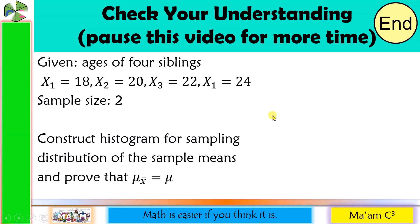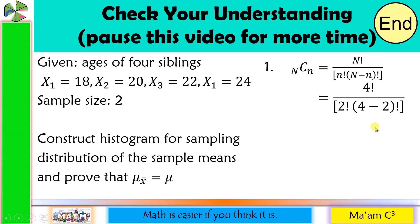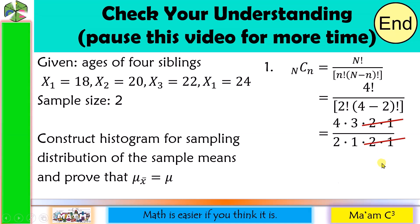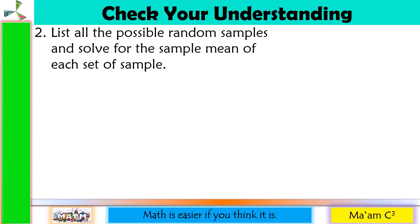Let us start. Number 1: determine the possible number of sample means. Our capital N (population size) is 4 and small n (sample size) is 2. Substituting into the combination formula: 4! ÷ (2! × 2!) = (4×3×2×1) ÷ (2×1 × 2×1). We cancel out and simplify to get 2×3 = 6 divided by 1, which equals 6. There are 6 possible samples.